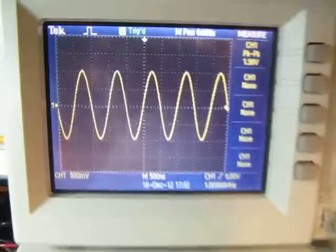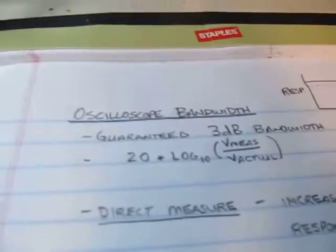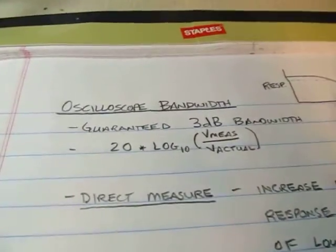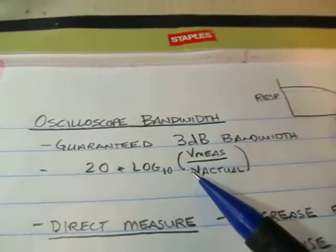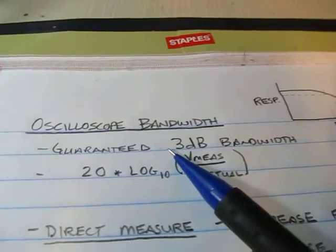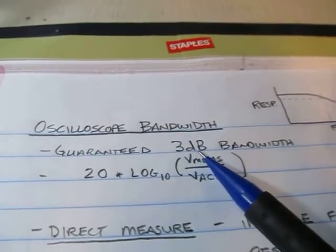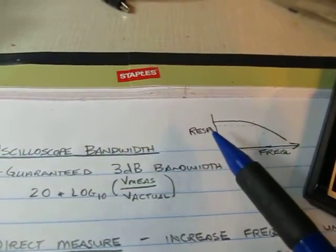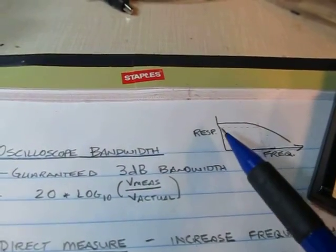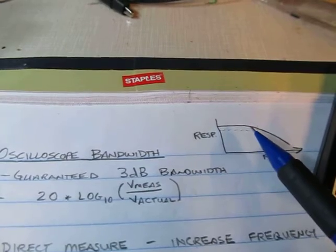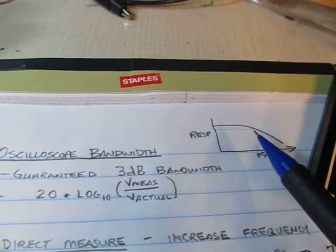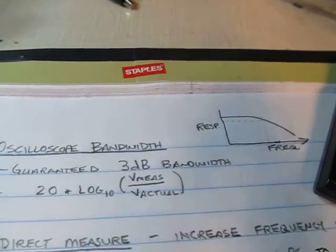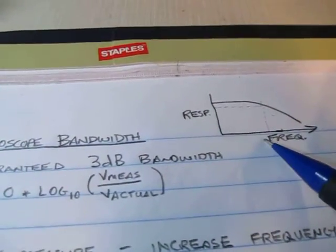There are actually two ways of doing this — just a quick review. One is a direct measure, and the other we can do by measuring rise time, so I'll show you both techniques. The bandwidth of the scope is essentially its guaranteed 3 dB bandwidth. The scope's vertical response curves are kind of flat at low frequencies, and at some point they start rolling off. Once that response is down by 3 dB, or the half power point, that's what's typically called the bandwidth of the scope.